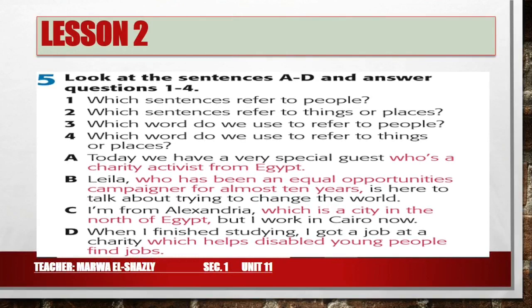Exercise 5: Look at the sentences A to D and answer questions 1 to 4. We're going to match the sentences with these questions. Question 1: Which sentences refer to people? Question 2: Which sentences refer to things or places? Question 3: Which word do we use to refer to people? Question 4: Which word do we use to refer to things or places?